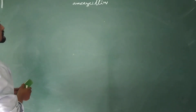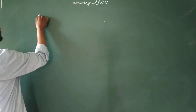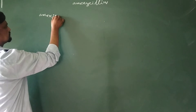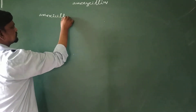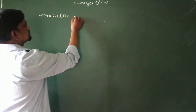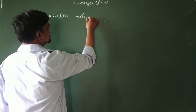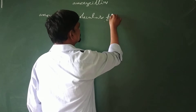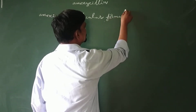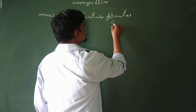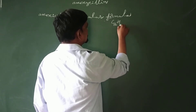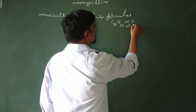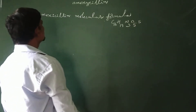Amoxicillin has a molecular formula: C16, H19, N3, O5, S.